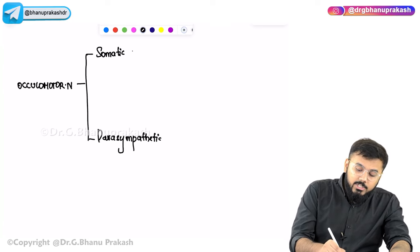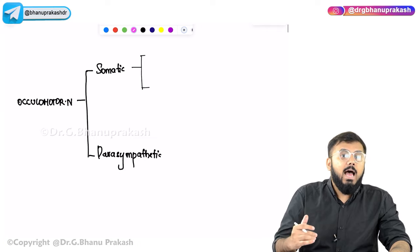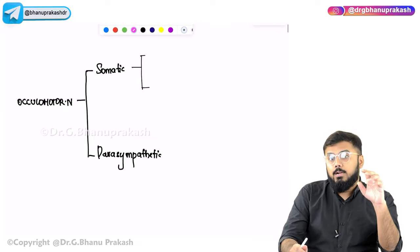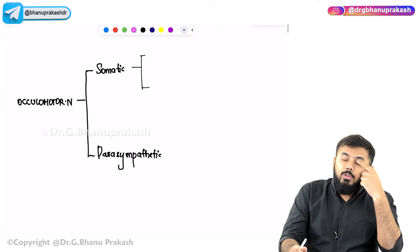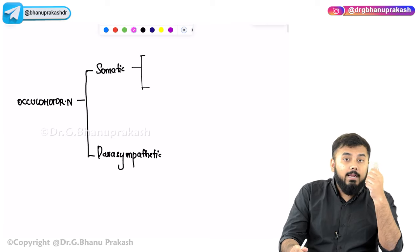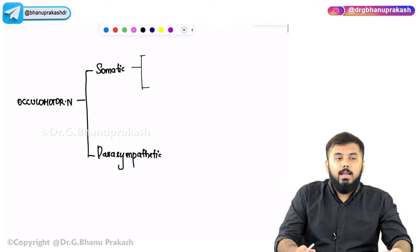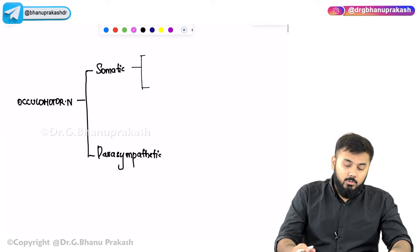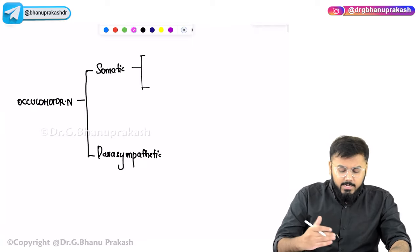Somatic functions of CN III include eyelid opening and eye movement. Eyelid opening is achieved by contracting the levator palpebrae superioris. Eye movement involves looking up, down, medially, and laterally. The parasympathetic functions are pupillary constriction and accommodation.